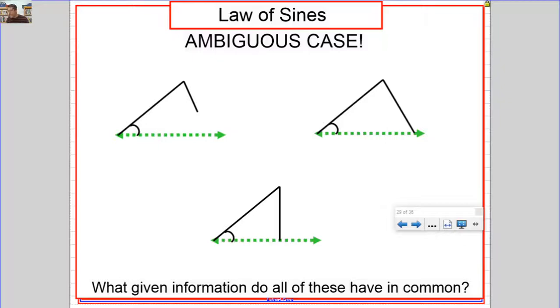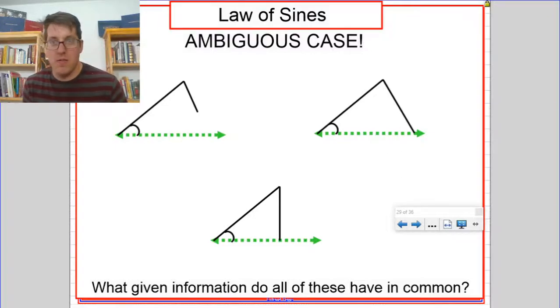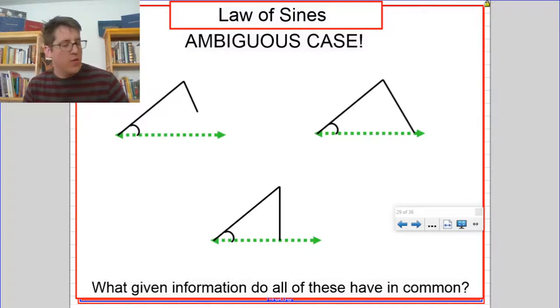Alright, here we go! What given information do all of these triangles have in common? Well, look at the given information that you see there. You see an angle, you see a side, you see a side.